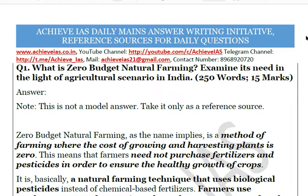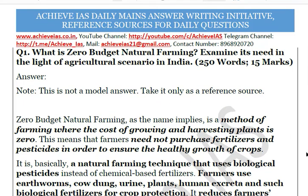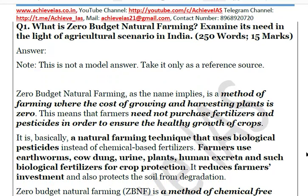Zero budget natural farming is a method of farming which doesn't require external inputs. It reduces the cost of growing and harvesting — in fact it makes that cost zero — because external inputs like chemical fertilizers, pesticides, and intensive irrigation are not needed. So there is zero input cost, and farmers need not purchase fertilizers and pesticides to ensure healthy crop growth.